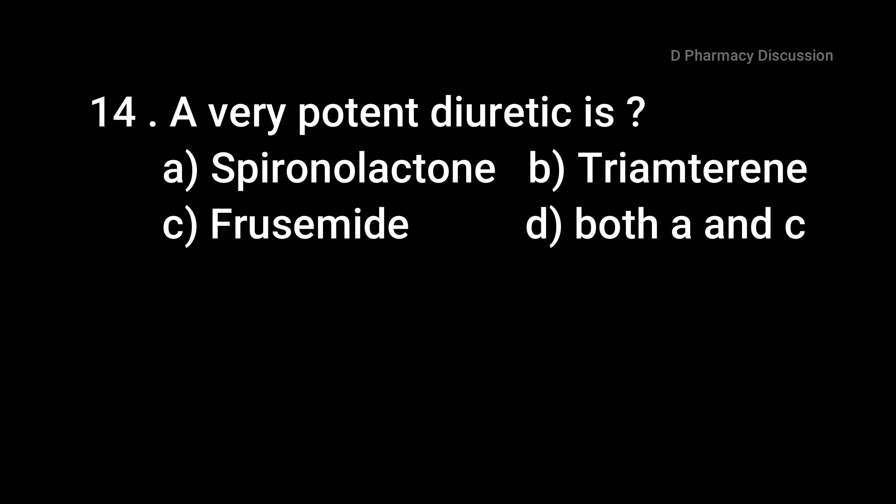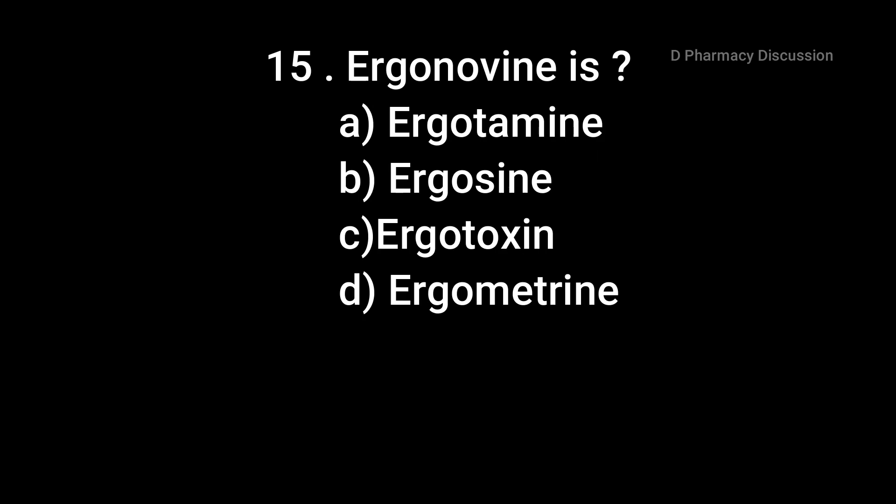Question number fourteen: a very potent diuretic is — option A: spironolactone, B: triamterene, C: furosemide, and option D: both A and C. The correct answer is option C, furosemide. Question number fifteen: ergonovine is — option A: ergotamine, B: ergosin, C: ergotoxin, and option D: ergometrine. The correct answer is option D, that is ergometrine.